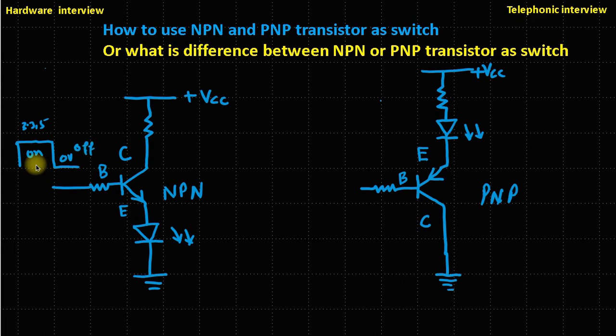But the PNP transistor is always the reverse of this. It always turns on at a low signal and turns off at a high signal.